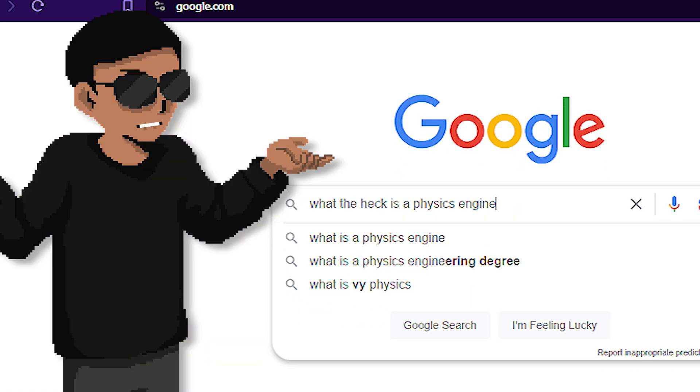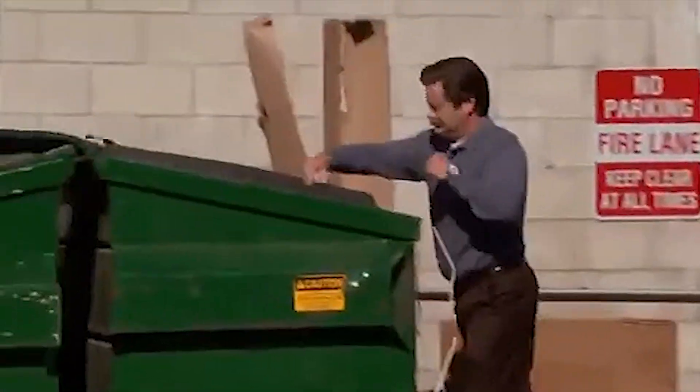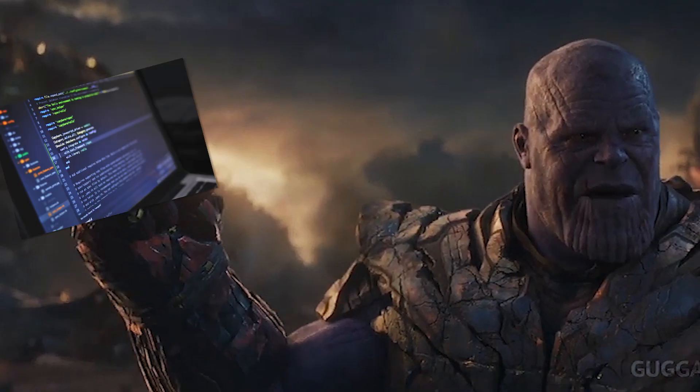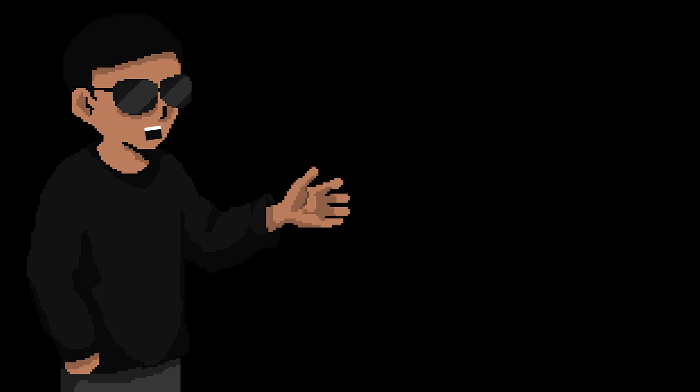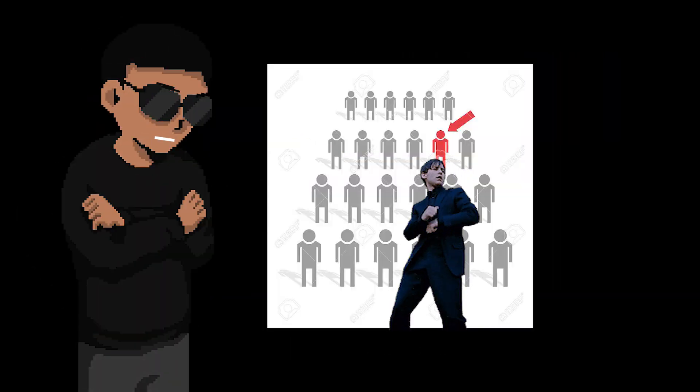Now for those of you wondering what the heck is a physics engine, a physics engine is a computer software that provides an approximate simulation. Basically you're imitating how objects interact in real life in computer programs, using the power of code and the laws of physics. You see them a lot in stuff like animations, games, 3D simulations, etc. Now that I've addressed the 1% of my audience, let's get down to business.